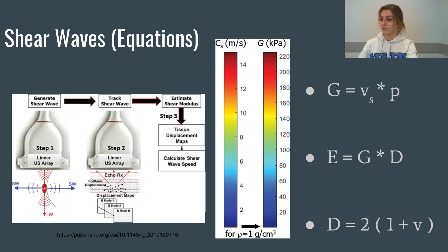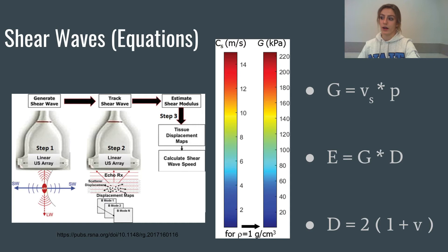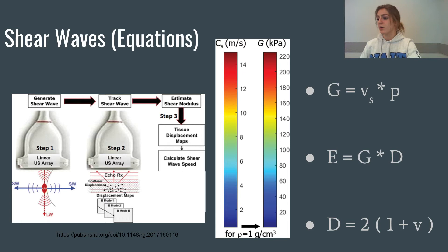On the far right of the screen we see several equations applied by the machine to calculate the shear modulus and the velocity of the shear waves. Our first equation is G = Vs² × ρ, the shear modulus equation, where G is the shear modulus, Vs stands for the shear velocity, and ρ is the density of the tissue, which is assumed to equal the density of water, so 1. Our next equation, E = G × D, is the Young's modulus equation — the more commonly used stiffness equation, directly proportional to the shear modulus. E represents the Young's modulus, G is the shear modulus, and D is a constant usually close to 3 in biological tissues. This ties into our final equation, as D = 2 × (1 + v), where v stands for Poisson's ratio.